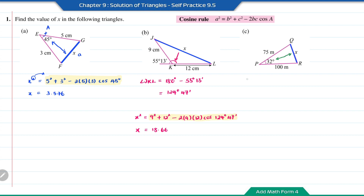For the next part, x squared equals 75 squared plus 100 squared minus 2 times 75 times 100 cos 32 degrees. So the length of x will be the square root of the answer, which equals 53.89.